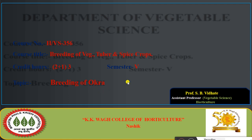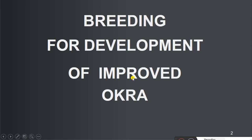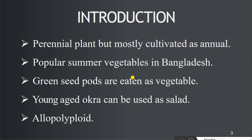Regarding breeding of okra, we discuss one by one. First, breeding for development and improvement in okra crop. Introduction: okra is a perennial plant but mostly cultivated as an annual. It is popularly a summer vegetable in Bangladesh; green seed pods are eaten as vegetable. Young okra can be used as a salad. Okra is an allopolyploid.